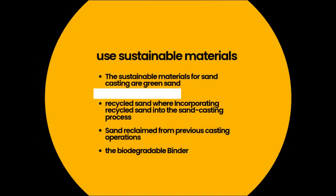Sand casting techniques incorporating green chemistry principles must use environmentally friendly, sustainable materials. Green sand — also referred to as natural sand or molding sand — consists of bentonite clay, water, premium silica sand, and organic additions. It is recyclable and may be upgraded by including new materials, minimizing waste production. Recycled sand can also be incorporated, helping reduce demand for virgin sand and conserve natural resources; sand reclaimed from previous casting operations can be reused after appropriate cleaning and treatment. Finally, biodegradable binders such as starch, cellulose, or other organic compounds are non-toxic, renewable, and can be easily decomposed, reducing environmental impact compared to traditional chemical binders.